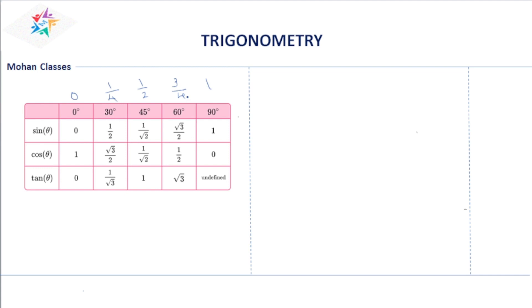Square root of 3/4 is √3/2, and square root of 1 is 1. For cos theta, reverse the order: cos 0 is 1, then √3/2, 1/√2, 1/2, and cos 90 is 0.